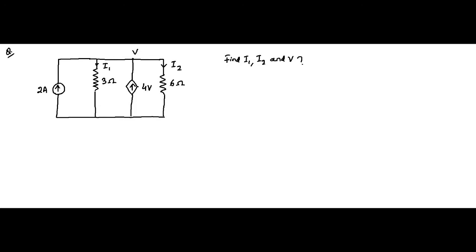This is the first question. We have been given a circuit and asked to find currents i1 and i2 flowing through the 3-ohm and 6-ohm resistors, and the voltage V at a node. As you can see, this circuit involves a voltage-dependent current source, which is dependent on this node voltage V. So it is a dependent current source and the parameter on which it depends is this node voltage.